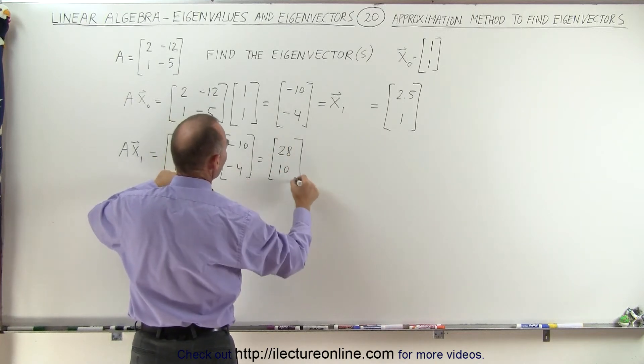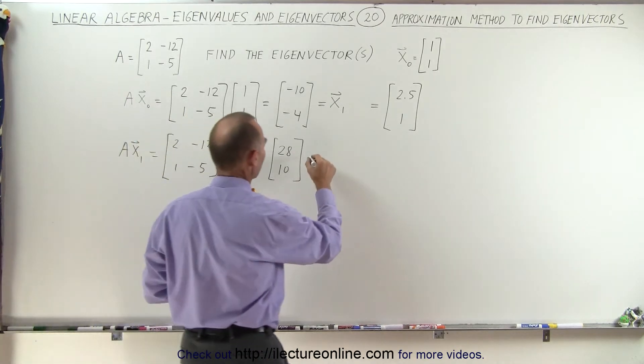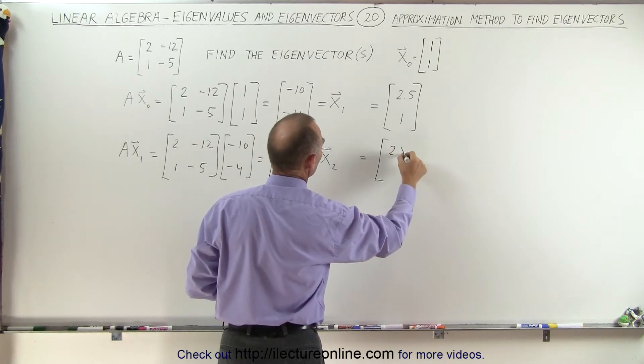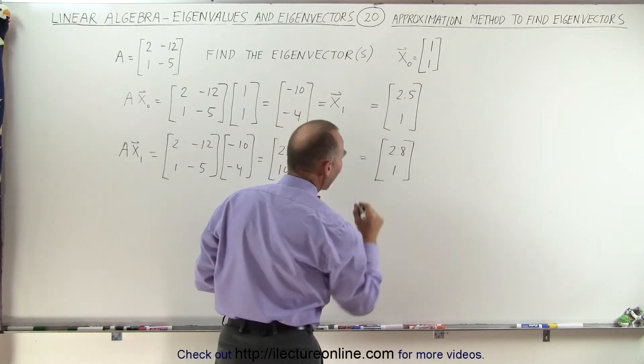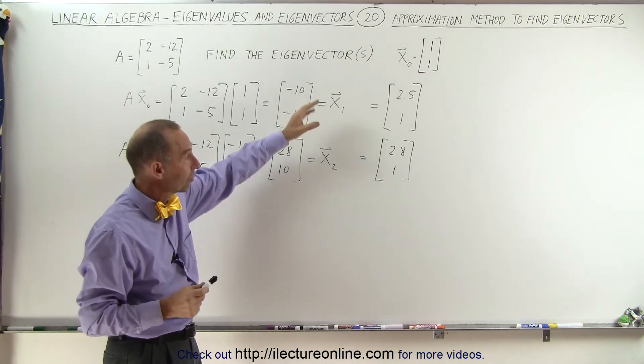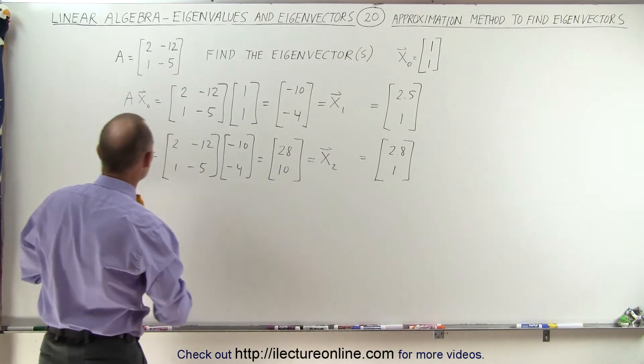So now we see that we have 28 and 10 which is a 2.8 to 1 ratio. So this is our x2 vector and now we can see that the ratio is 2.8 to 1. I'm beginning to suspect that my eigenvector is [3, 1] because it seems to be converging to something like that. But let me go one more step and see what happens.